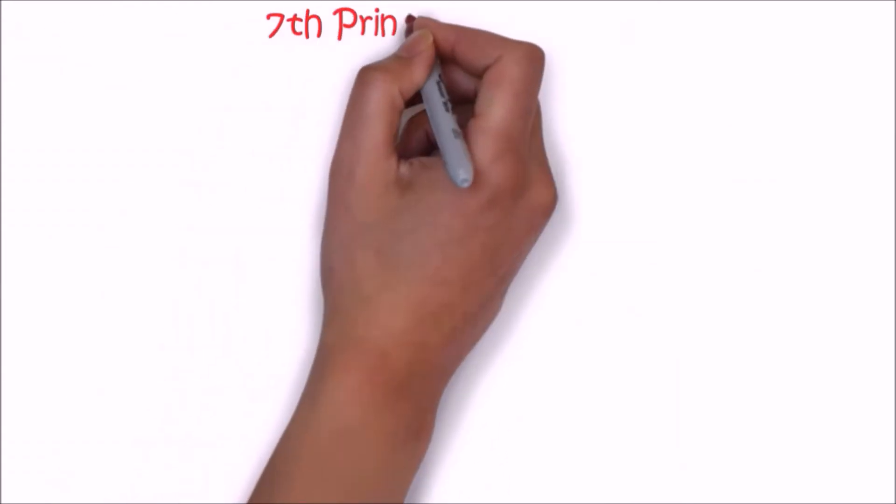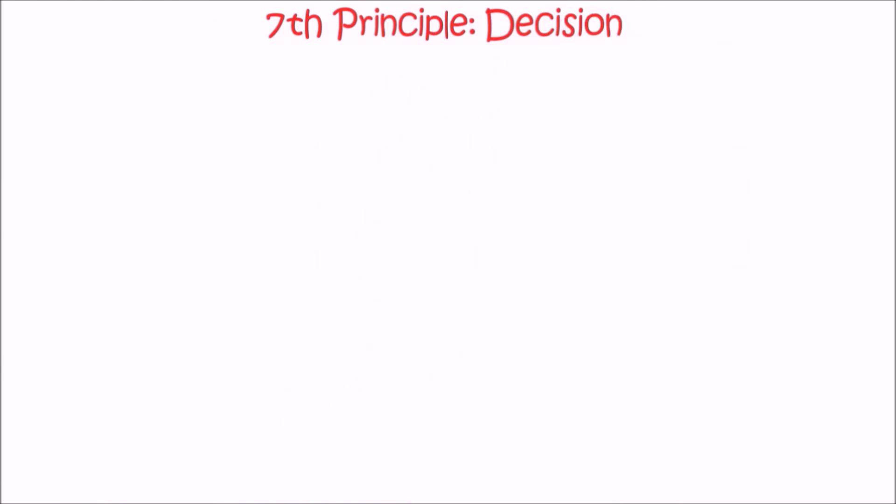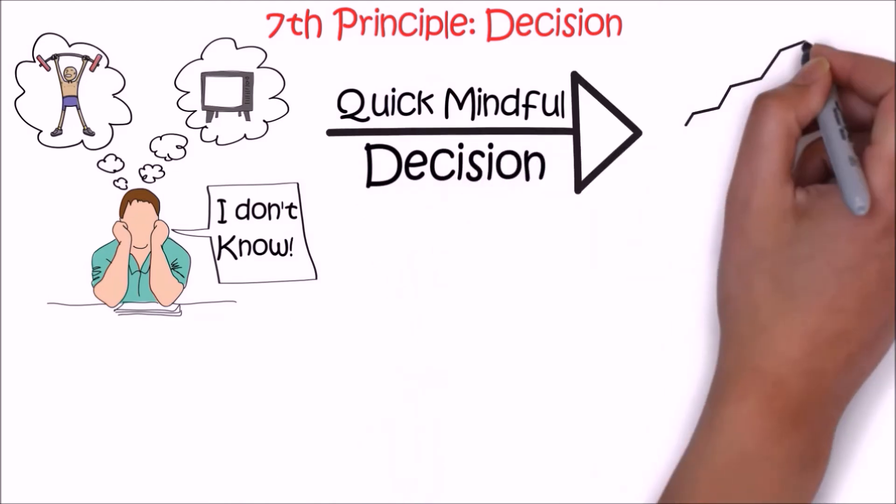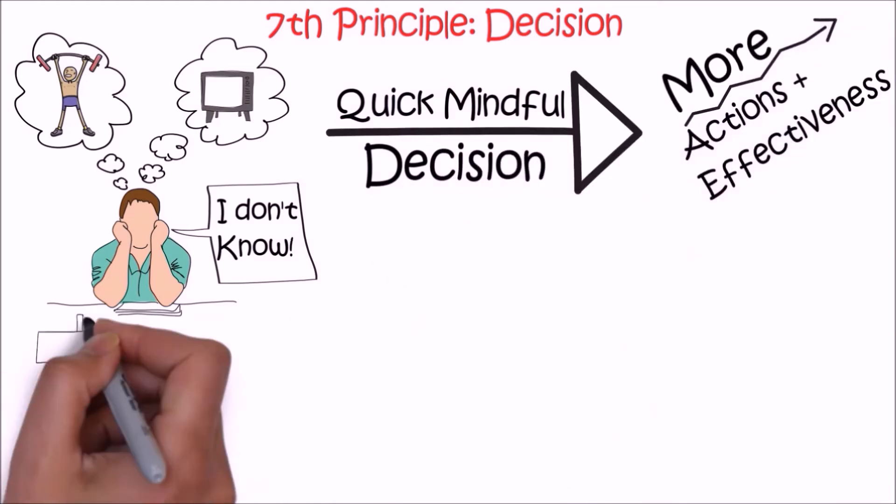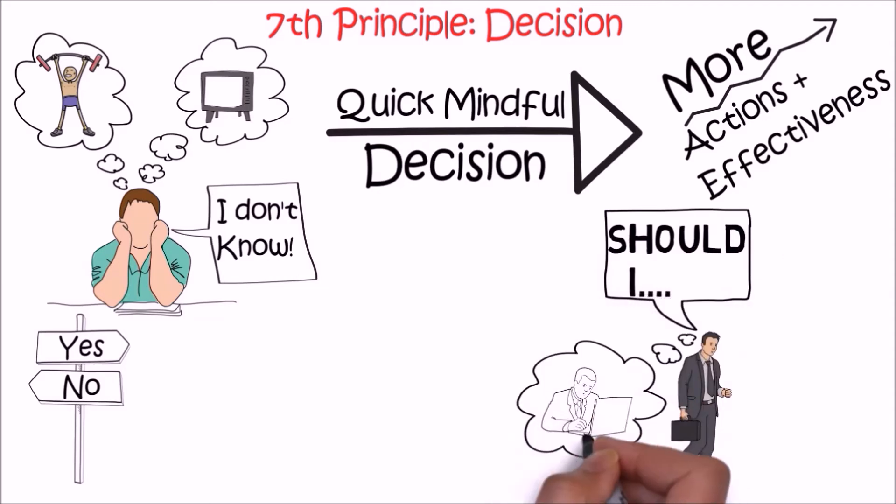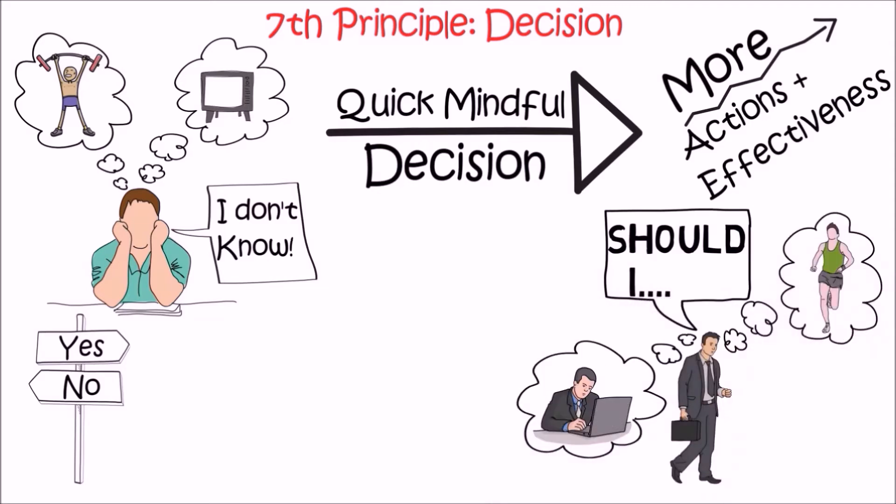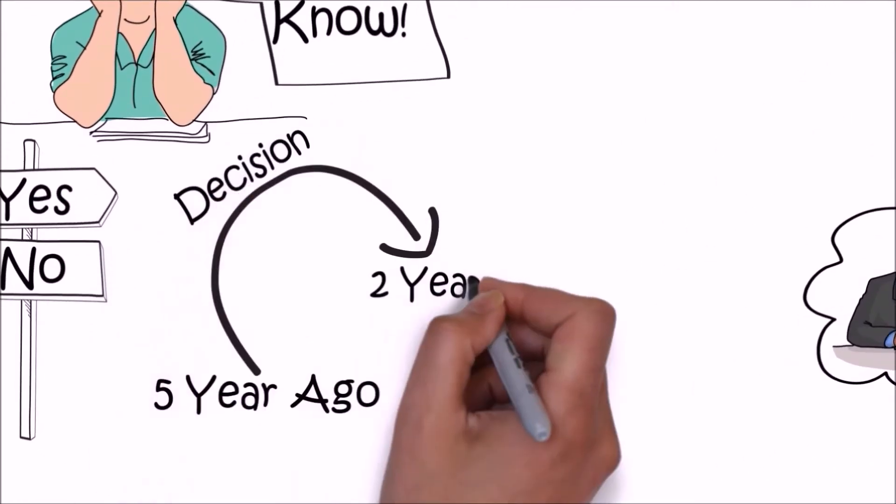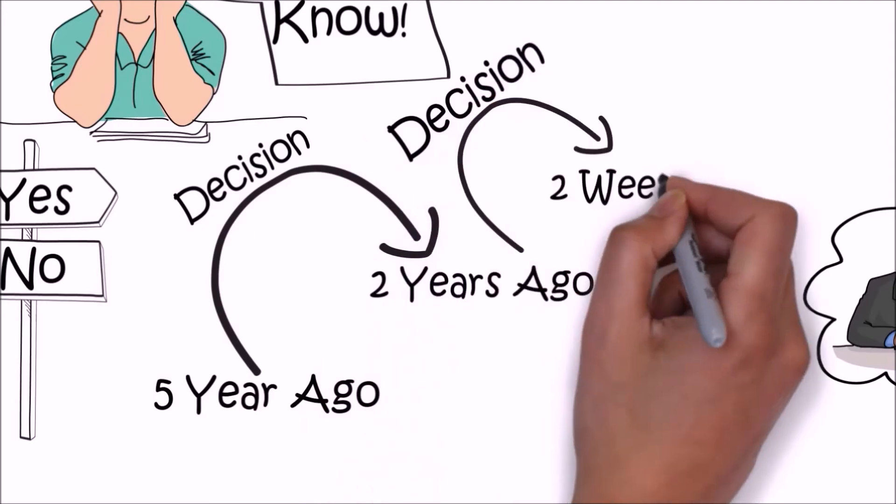The seventh principle is decision. How many times do you procrastinate because you can't decide whether to join the gym or not, whether to start that thing or not? The ability to make quick, mindful decisions leads to more action and effectiveness. Every step of our life is filled with yes or no. We have to decide whether to do the thing or not each moment of life. The small decisions we make every day are very important. We are here because of decisions we made five years ago, two years ago, two weeks ago. Those tiny decisions brought us right here.